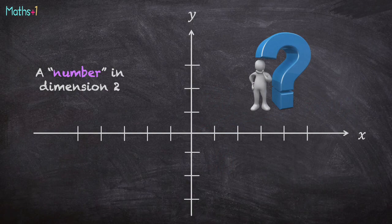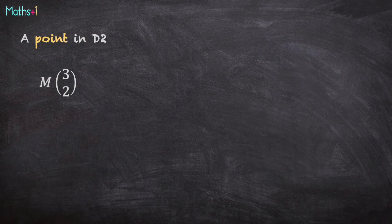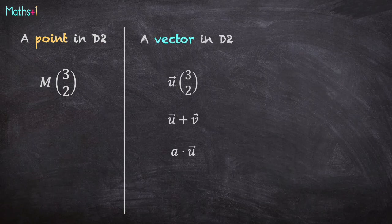But what is a number in dimension 2? We have seen that a point in dimension 2 is just a location in the plane. It has two coordinates. A vector in dimension 2 has two coordinates, and it is possible to add the vector and to multiply by a number called scalar.